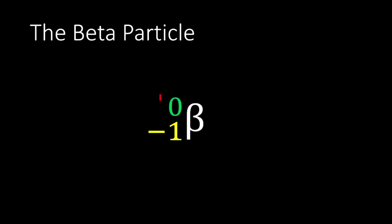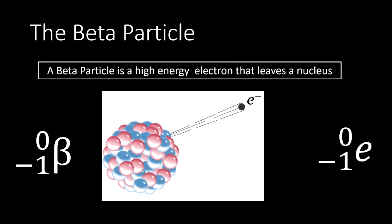Notice in the mass number slot, it has a zero. So that means there's nothing in the nucleus. In other words, there's no protons and there's no neutrons. What a beta particle turns out to actually be is a high energy electron that leaves the nucleus. So it's actually just an electron. That means just like we could say that the alpha particle was a helium nucleus, we can say that the beta particle is an electron. Those are the same thing.